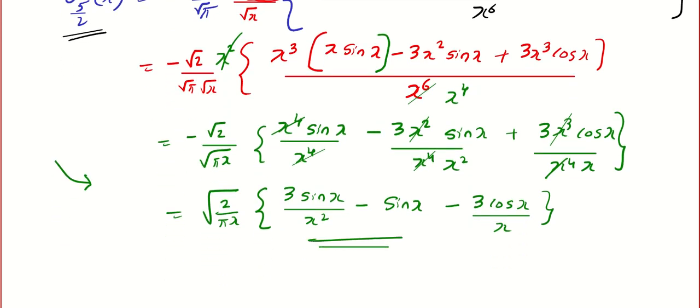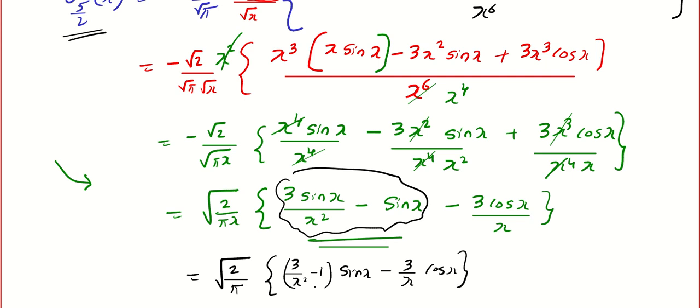So that's it. Now most probably they will ask you to prove that this is equal to something. Just manipulate a little bit because you can see sin x is common, right? So if you take sin x common we will get (3/x² - 1)·sin x - (3/x)·cos x. Maybe you may have to take LCM, anyway that's not a big deal. So your job is J-5/2(x). I'll be back with a few more problems in Bessel equation. Till then my friends, bye.